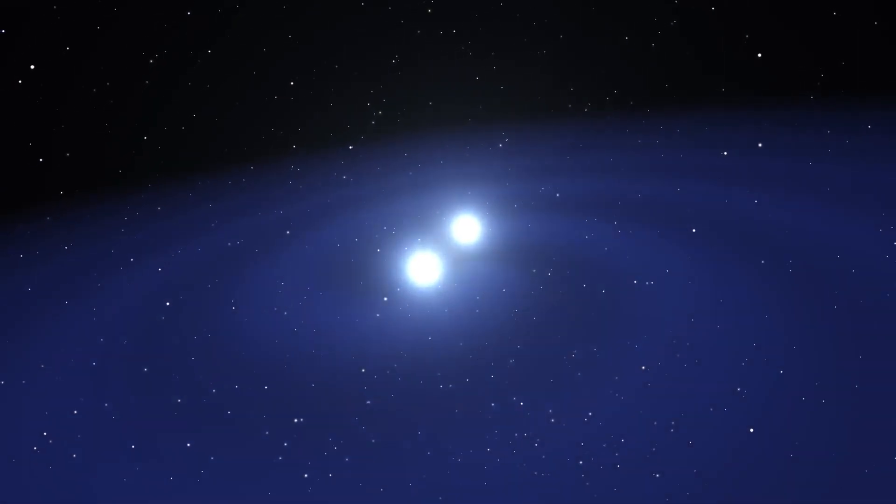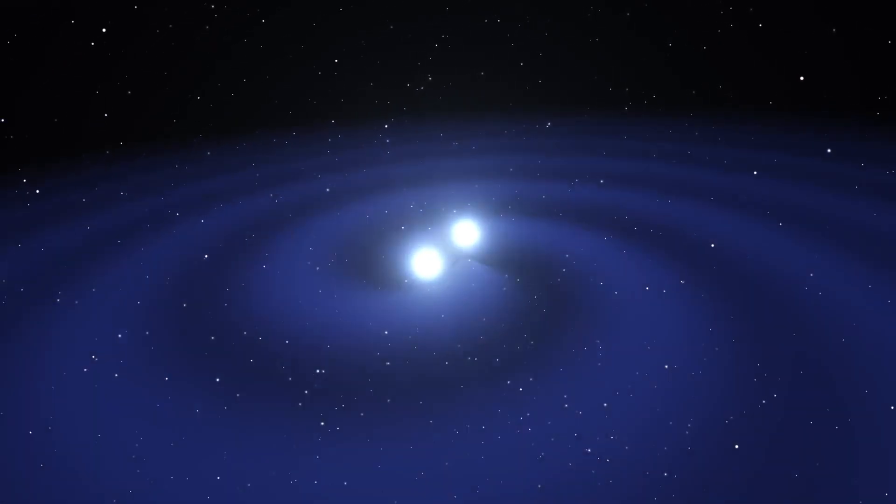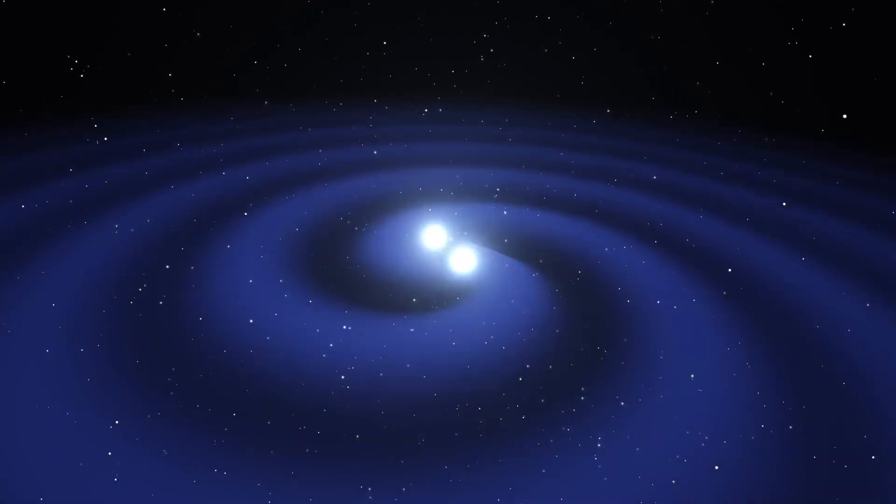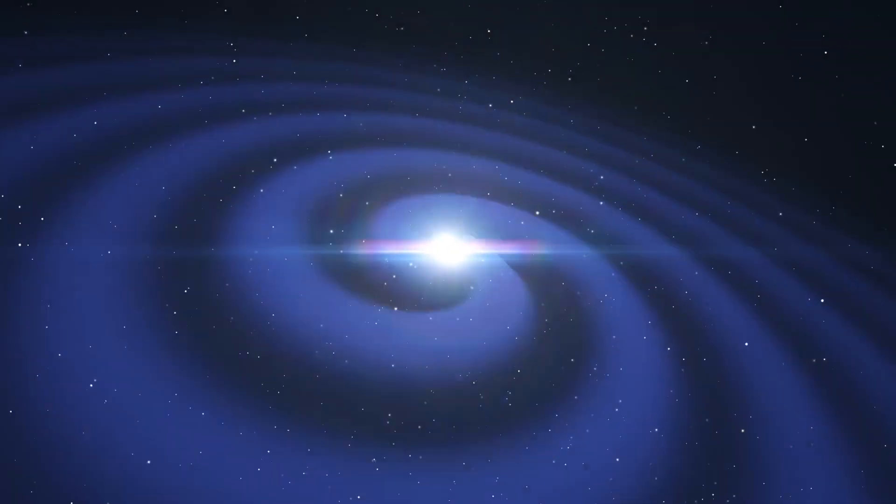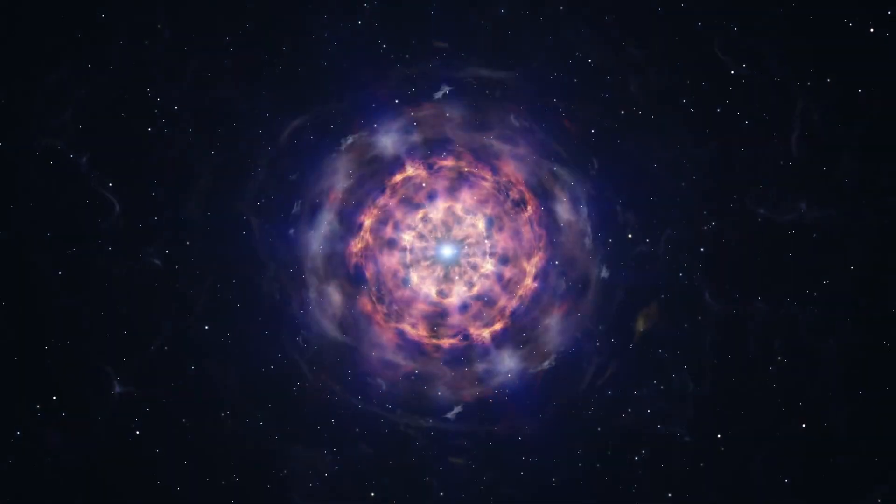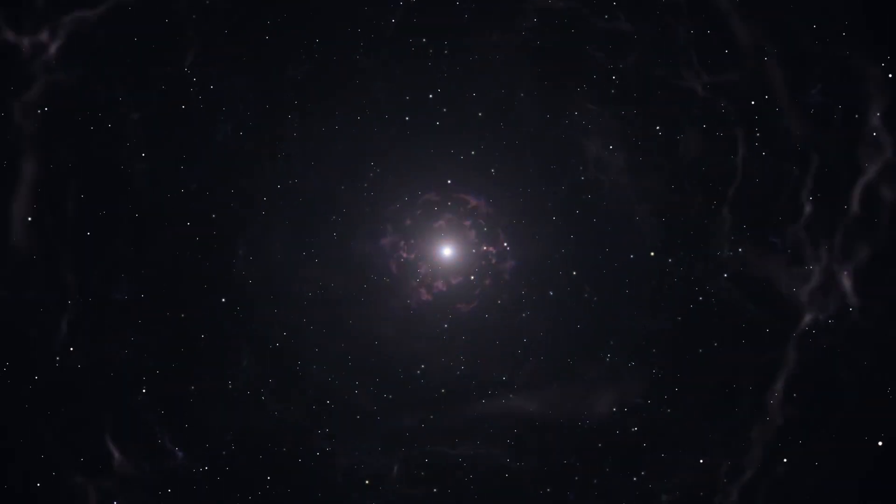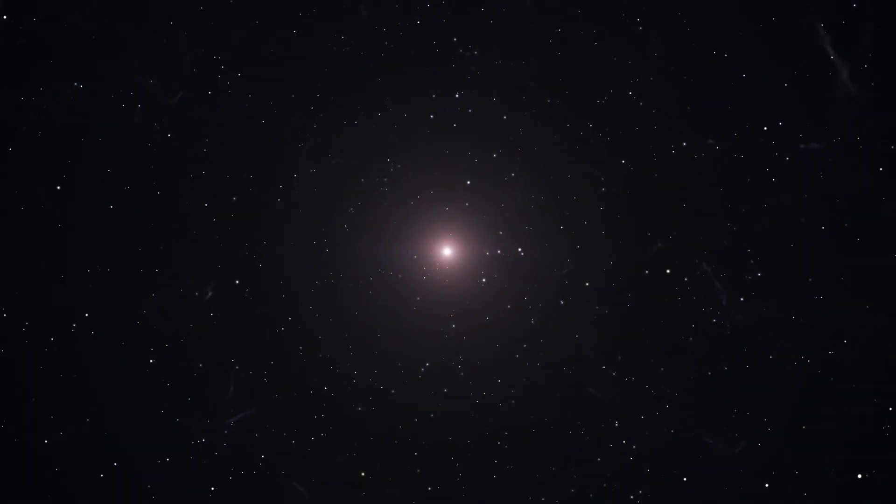But these orbits can become unstable and decay, and essentially what happens is the two neutron stars are orbiting around each other until eventually the orbits spin up, they merge together in another huge explosion and emit a lot of light, and interestingly a second signal. They also emit something called gravitational waves.